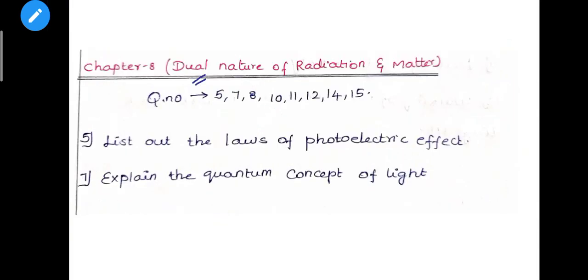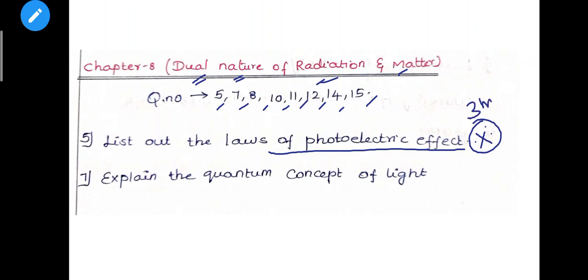Next, Eighth lesson - Dual Nature of Radiation and Matter. Question numbers 5, 7, 8, 10, 11, 12, 14, 15. Question number 8 - List out the laws of Photoelectric Effect. It is also a 3 mark important question. Next, Quantum concept of light - also a 3 mark question, not 5 mark.